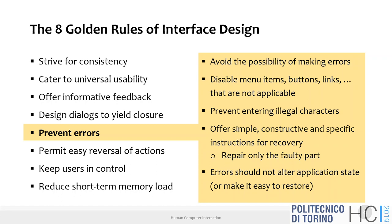You disable all interface elements that would cause an error condition if activated — but you don't remove them from the interface. For example, in Word or PowerPoint you always see the full menus and toolbar icons, but some are grayed out. They cannot be used in the current context. The system is showing its state: in this state you cannot do that action, while at the same time preventing you from requesting something that would cause an error.